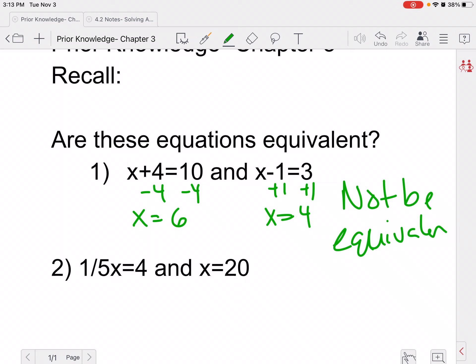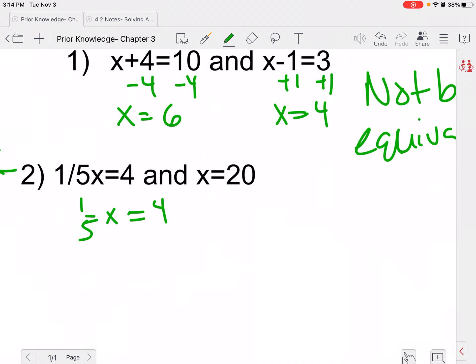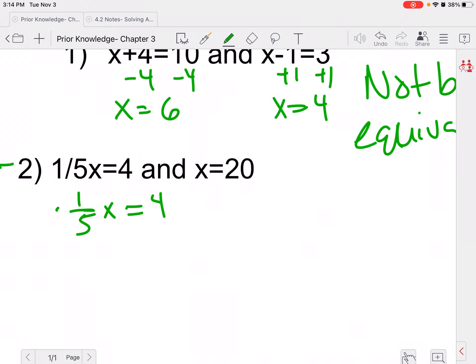Okay. So go ahead, try this one and decide if those are equivalent. So 1/5x equals 4. We know that the other one is x equals 20. So I would multiply both sides by 5 over 1, or divide by 1/5, same thing. And then we would get 20. So yes, they are in fact equivalent.